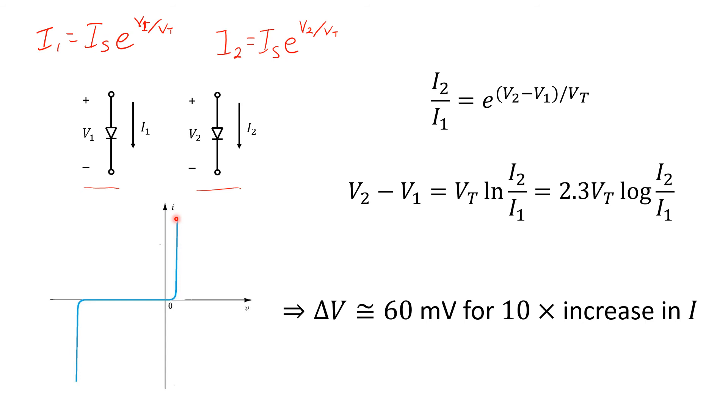Finally, just a reminder that this exponential voltage-current relationship only applies in the forward and reverse bias regions, and does not apply in reverse breakdown over here. So these expressions also don't apply in reverse breakdown.